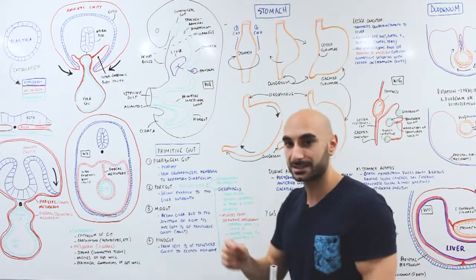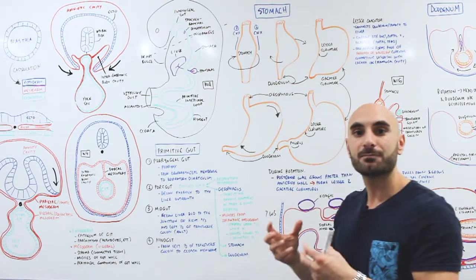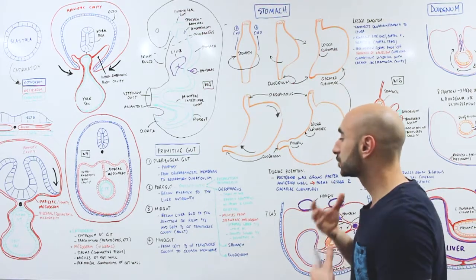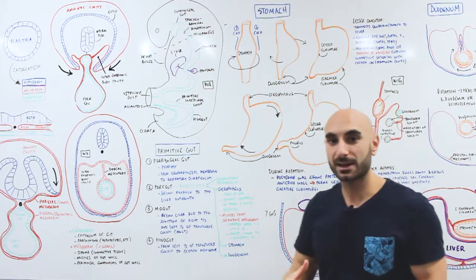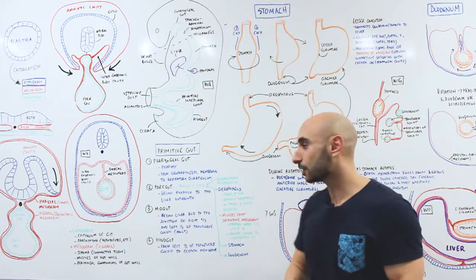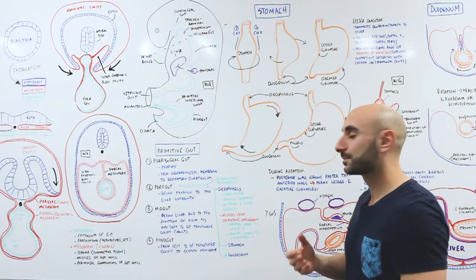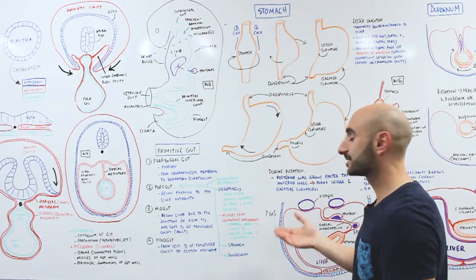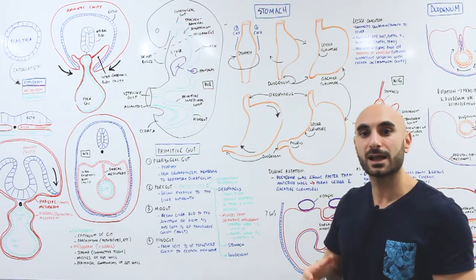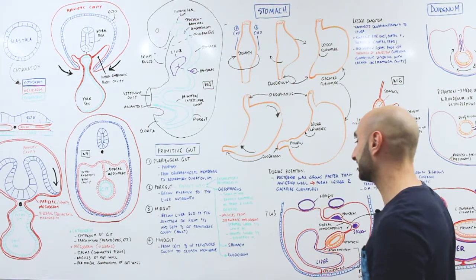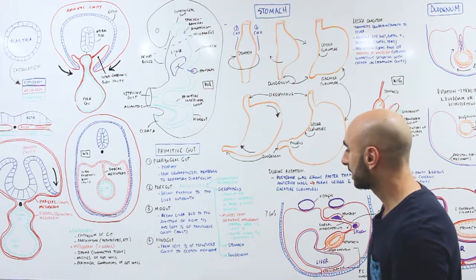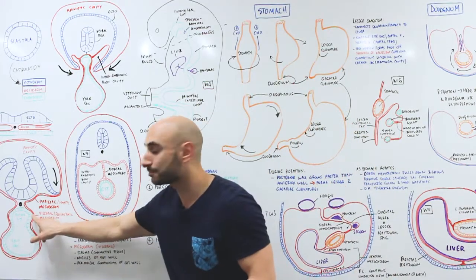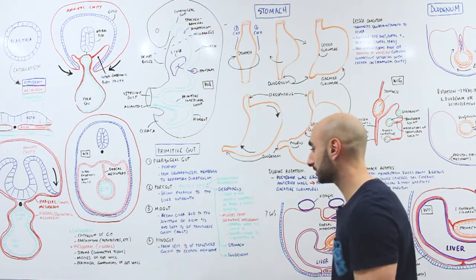The esophagus is made out of muscle. The upper two-thirds is striated muscle and it's innervated by the vagus nerve. The lower third is smooth muscle and it's innervated by the splanchnic nerve. These muscles are from the splanchnic mesoderm — from the visceral mesoderm, as already mentioned. And that's all there is to esophagus embryology for this video.